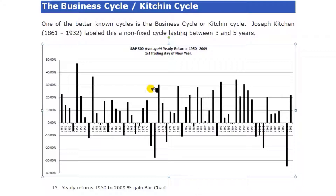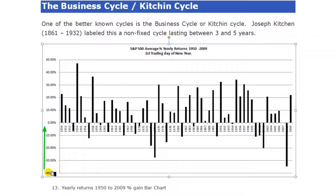Let's first clarify this chart. This is a chart of the performance for an entire calendar year, from the first trading day to the last trading day. Across the middle you can see the years from 1950 to 2009, and here you can see the performance — whether the S&P 500 is making a 10%, 20%, 30%, or 40% loss, or a positive return of 10%, 20%, 30%, 40%, or 50% for that year. It's an interesting way to look at an index via a bar chart as opposed to a line chart.